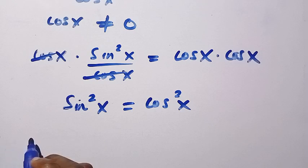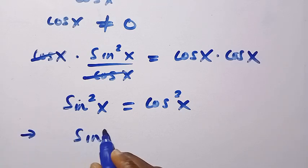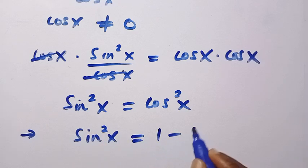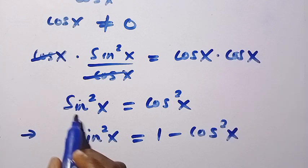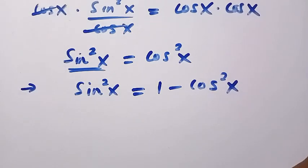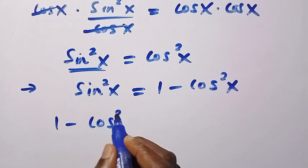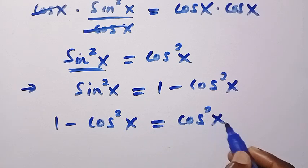So replacing sin squared x with this identity, we are going to have 1 minus cos squared x equals cos squared x.